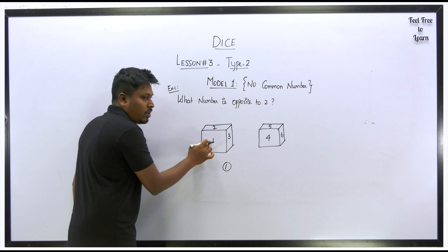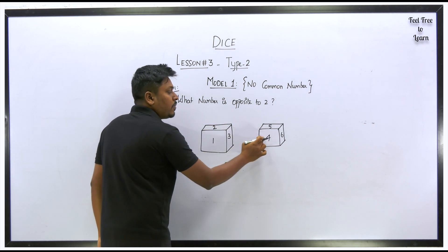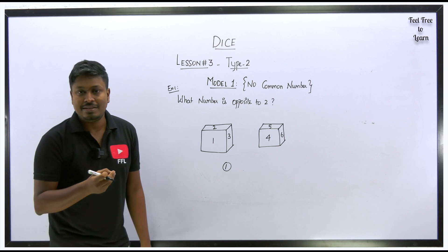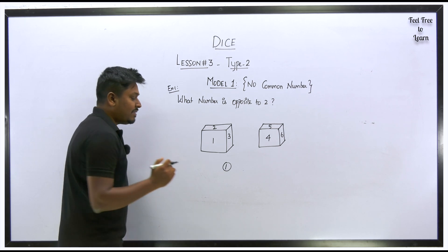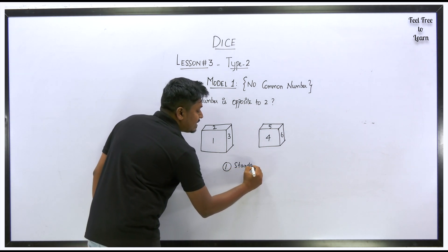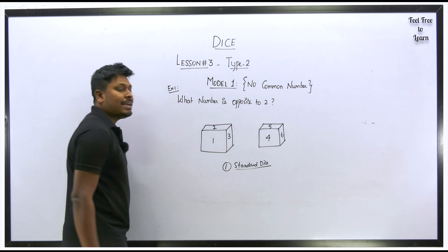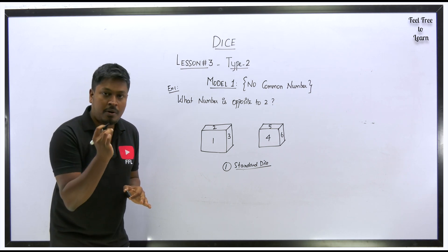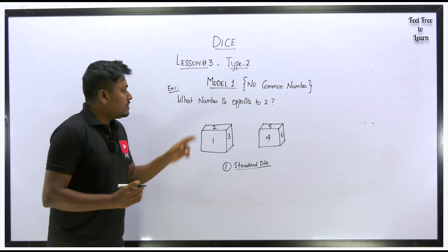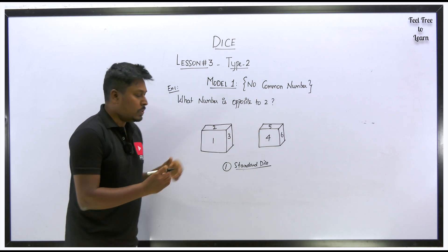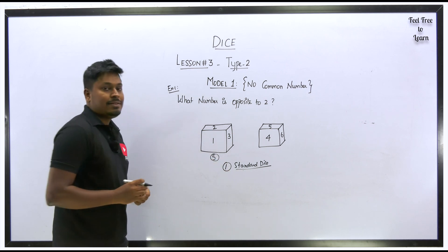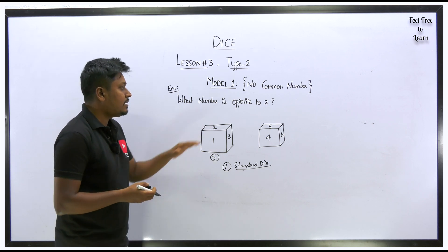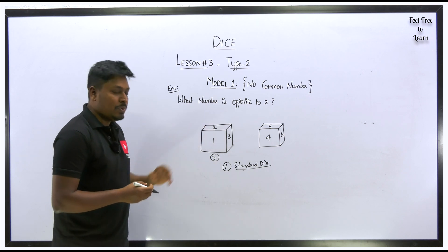Checking the diagrams: adding any two adjacent faces — 2+1=3, 3+1=4, 3+2=5, 5+4=9, 6+5=11, 6+4=10 — none of the adjacent face pairs sum to 7. Since no two adjacent faces total 7, this is a standard dice. For a standard dice, the sum of opposite faces is always 7. So the number opposite to 2 must be 5, because 5+2=7.